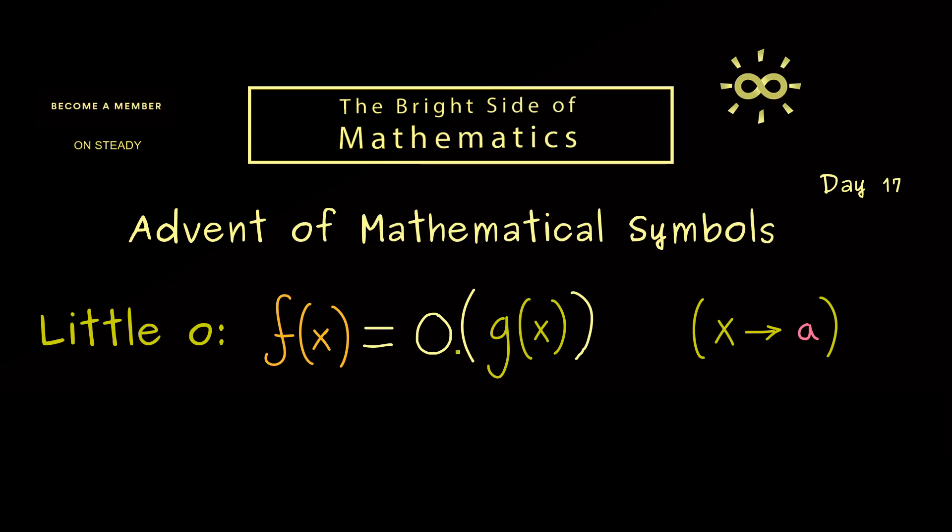In fact, this little o should tell you that the function g grows much faster than the function f when x goes to a, and this property can be expressed with a limit process.